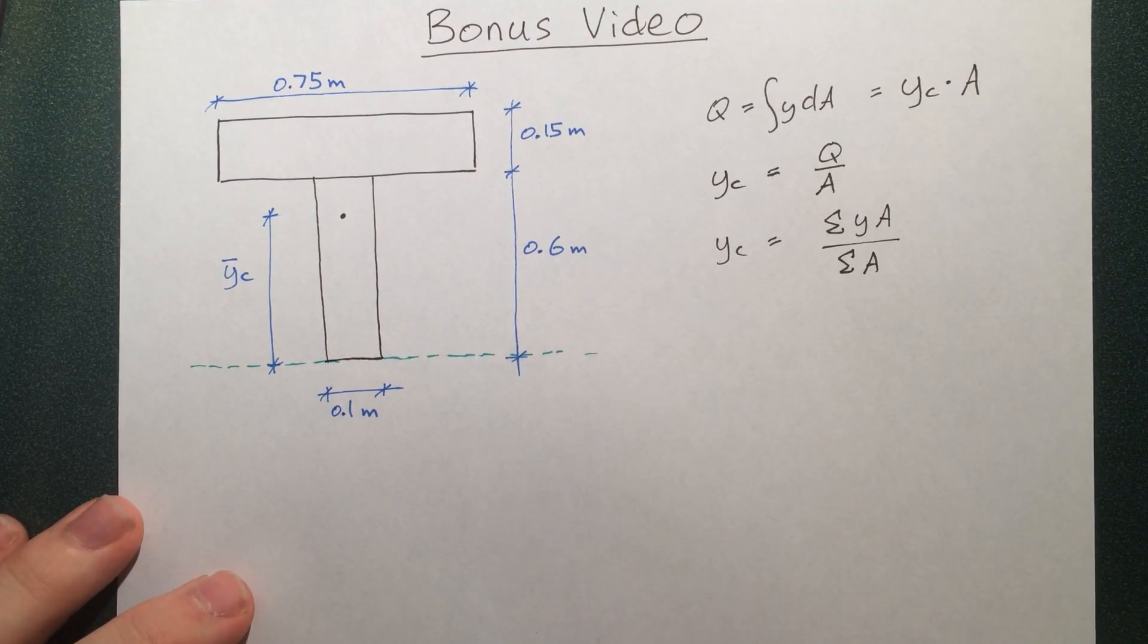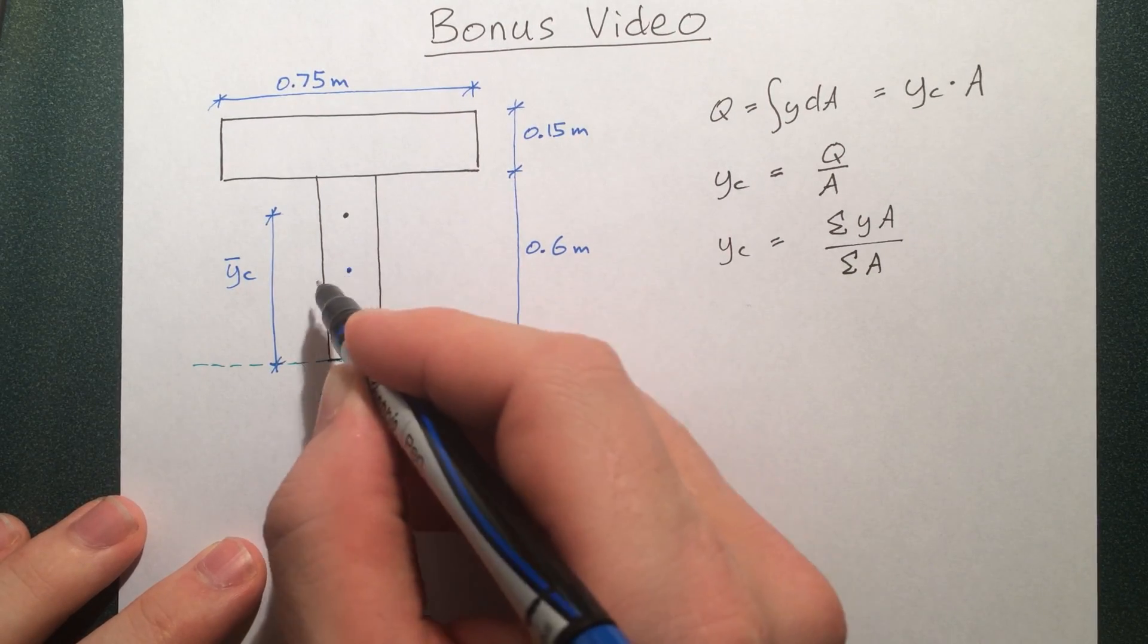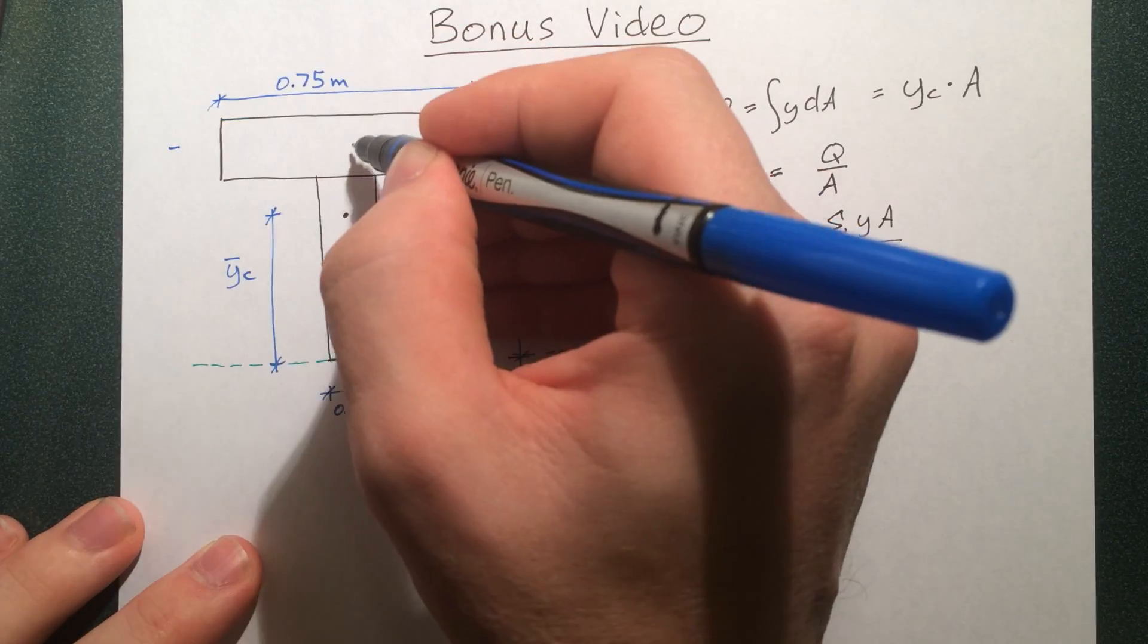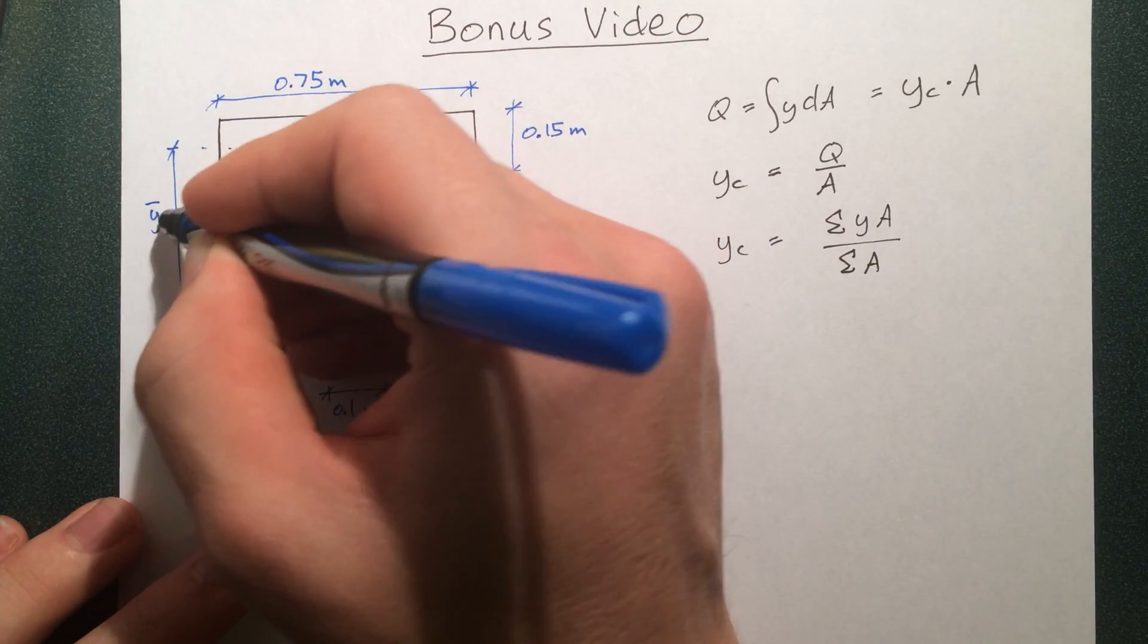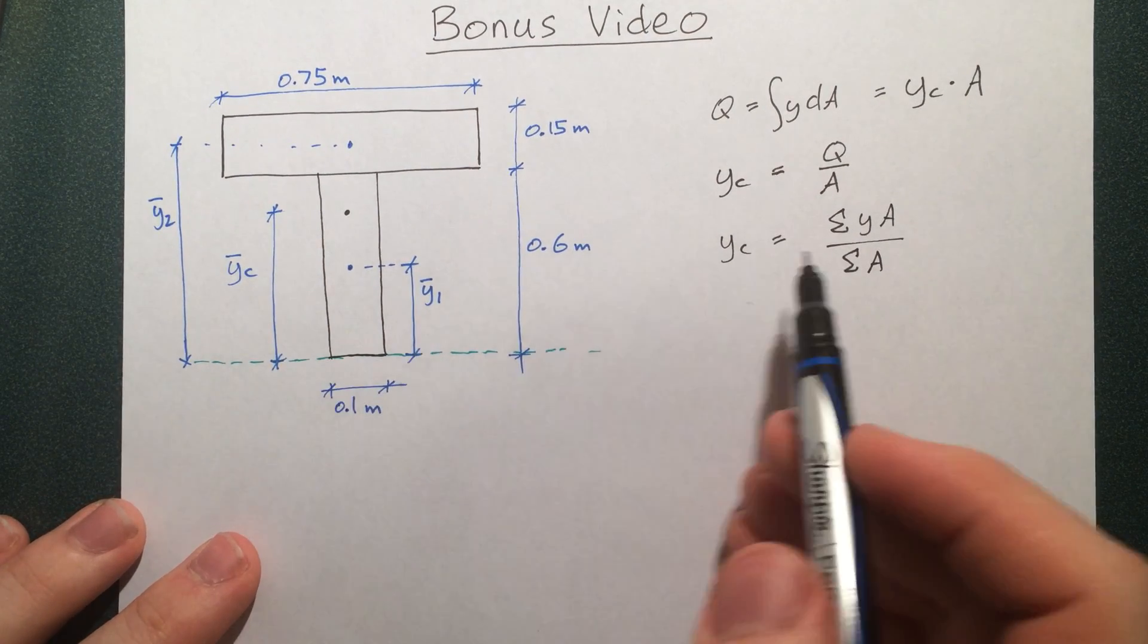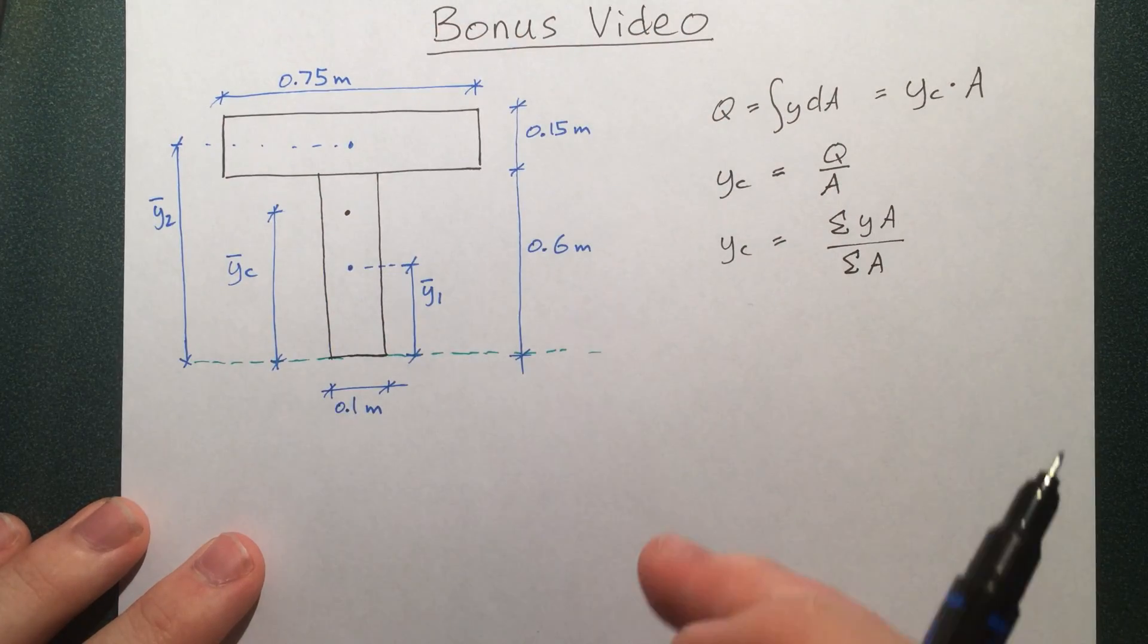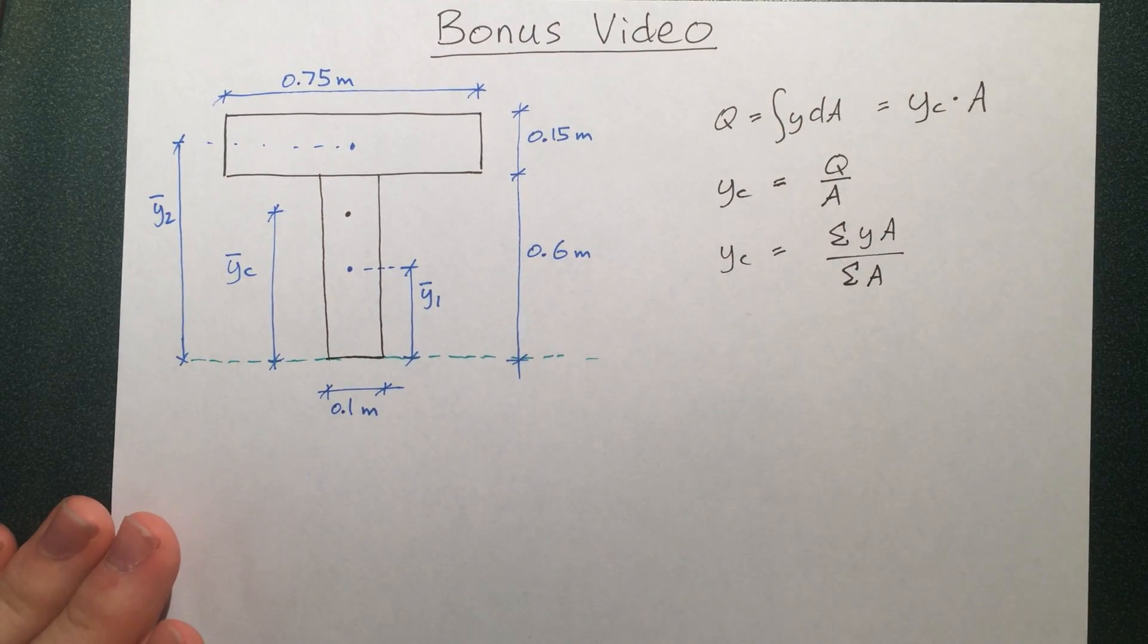I'm going to call the distance to the centroid y-bar, or y_c for the centroid. Each of these little blocks has its own centroid. Now when we go to find this y-bar centroid of the whole thing, it's basically going to be like an average between the Q of this piece and the Q of this piece, because the Q of all the pieces added up should be the Q of the whole thing. That's what we're doing here, just with a little bit of rearrangement.